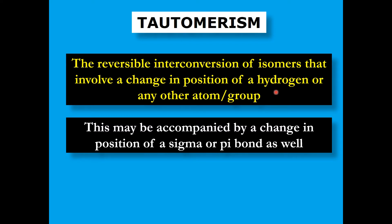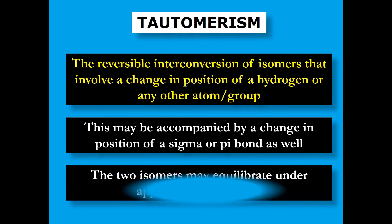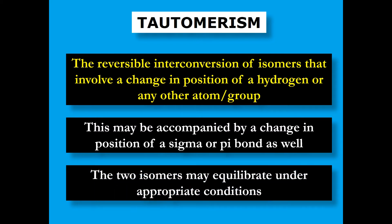Because we are talking about the change in position of hydrogen, it has to be accompanied by a change in position of a sigma or a pi bond. The sigma bond is usually shifted from one position to another, and as a result a pi bond will also change its position. These two isomers can equilibrate under appropriate conditions — if you provide appropriate conditions, they will co-exist in equilibrium.